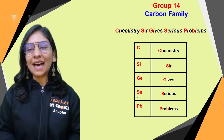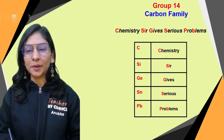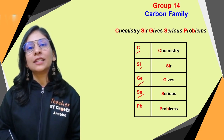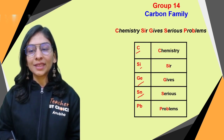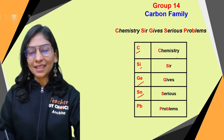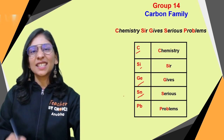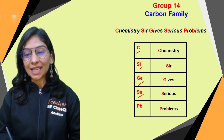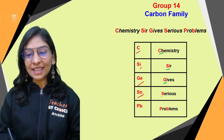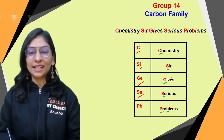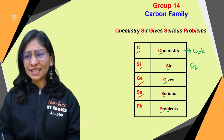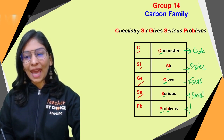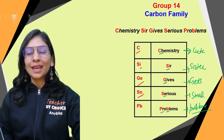Group 14 — the carbon family — members are Carbon, Silicon, Germanium, Tin (Sn/Stannum), and Lead (Pb/Plumbum). Remember: 'Chemistry Sir Gives Serious Problems' — C, Si, Ge, Sn, Pb — or alternatively: 'Cute Sister Gets Small Problems.' Either works for remembering this group.